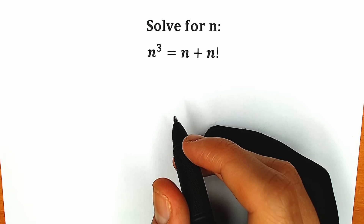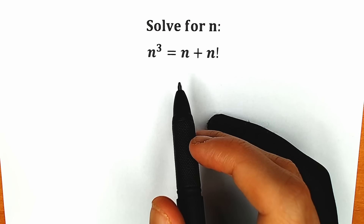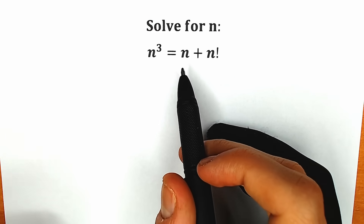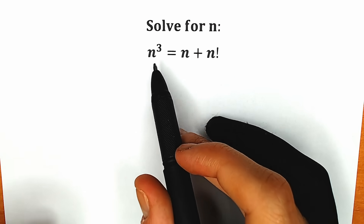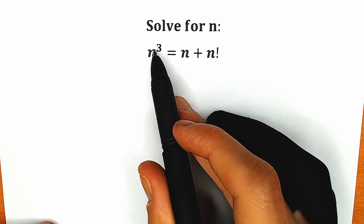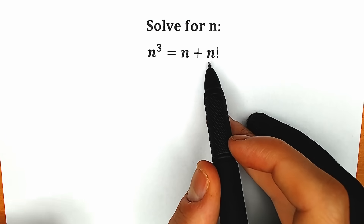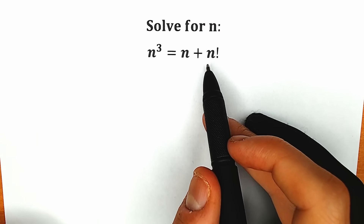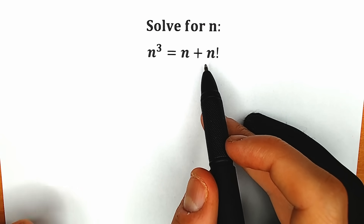Hello everyone, happy to see you here, welcome back to my channel. I'm Mathematics. Today we have a very interesting cubic equation — it's a mixture of the third power and factorial, which makes this a really great olympiad question.